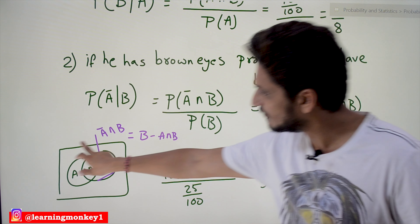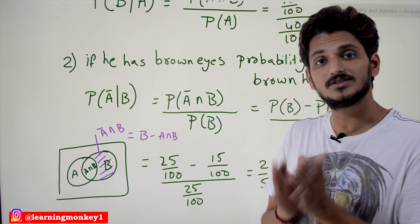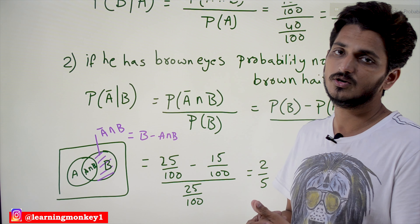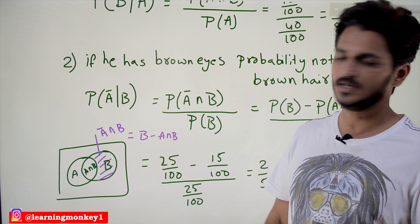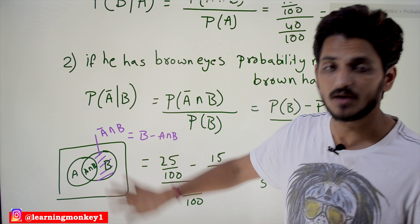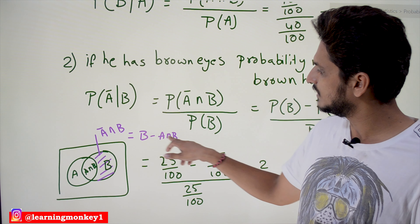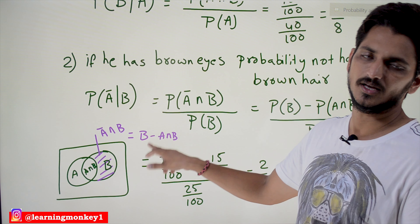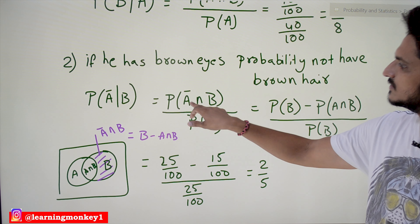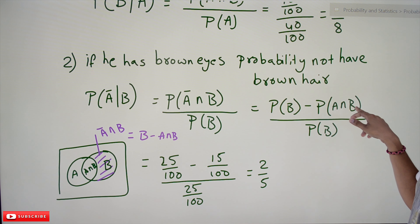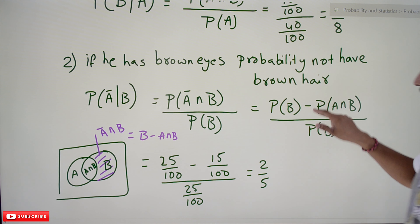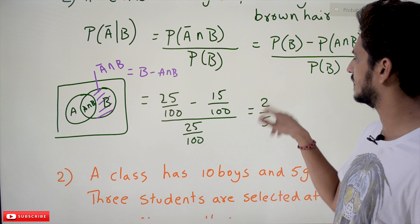From the Venn diagram point of view — these basics were already discussed in our sets and relations mathematics; if you are not good at this, please watch our discrete mathematics playlist. A complement ∩ B can be written as B minus A ∩ B (set difference). So P(A complement ∩ B) = P(B) − P(A ∩ B). Applying values: (25/100 − 15/100) / (25/100) = 2/5.